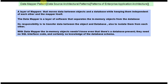This is the explanation: a layer of mappers that moves data between objects and a database while keeping them independent of each other and the mapper itself. We will see one example so that you will understand this statement.